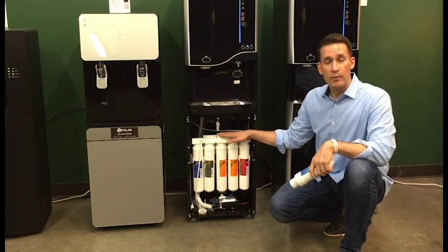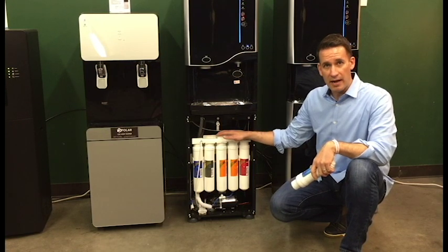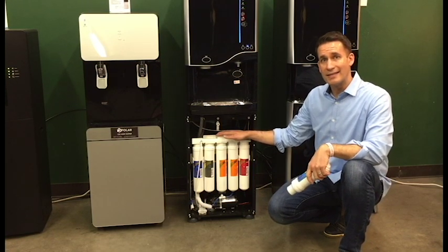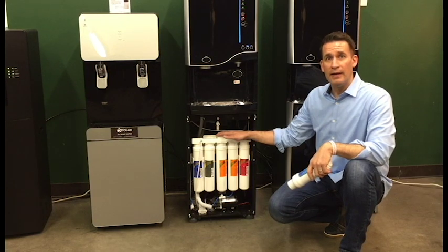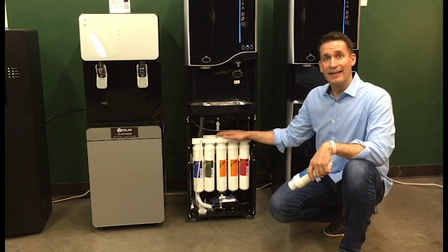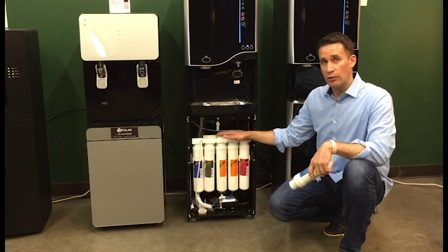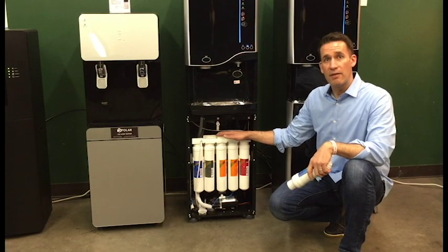And then we have the reverse osmosis membrane. This actually purifies the water down to 0.001 micron and takes out all the lead, nitrates, volatile organic compounds, and other heavy metals.